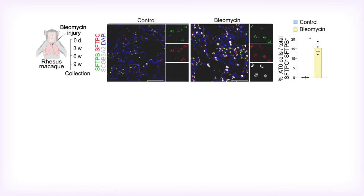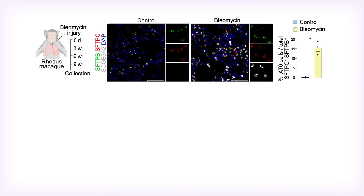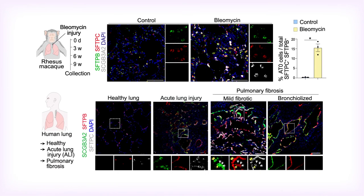But when the team looked at tissue from monkeys, a close relative of humans, they found similar changes after lung damage. This role in repair was confirmed in tissue from humans with lung injury, where AT0s were found to occur in distal gas-exchanging air sacs.